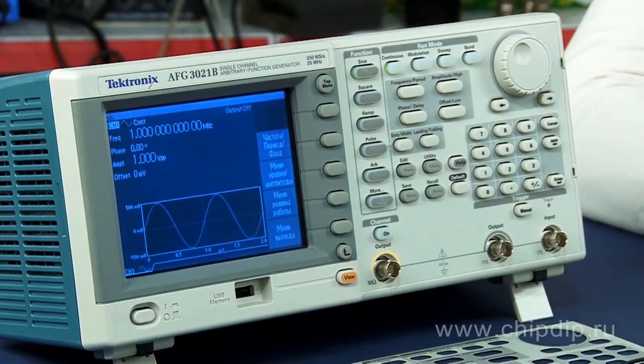The Tektronix AFG3021B generator is a multi-functional device having a reference oscillator with plus minus 1 times 10 to the minus 6 deviation per year.